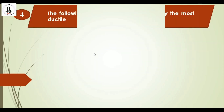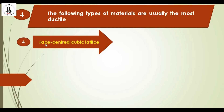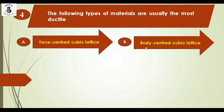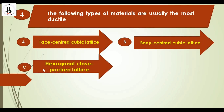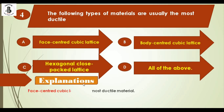The following types of materials are usually the most ductile: option A face-centered cubic lattice, option B body-centered cubic lattice, option C hexagonal closed pack lattice, and option D all of the above. Face-centered cubic lattice materials are the most ductile. The right answer is option A.